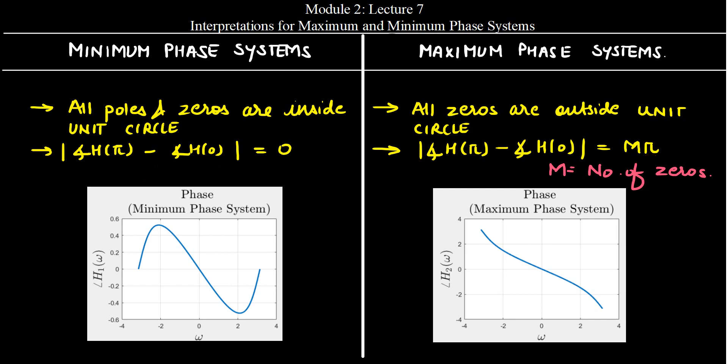The value m·pi is the maximum possible deviation in the phase. For our considered example, the phase for the minimum phase system was obtained such that at omega equal to zero and at omega equal to pi, both values are equal to zero and the deviation is least. In the maximum phase system example, at omega equal to zero it was zero and at omega equal to pi it was minus pi, so this deviation was maximum.